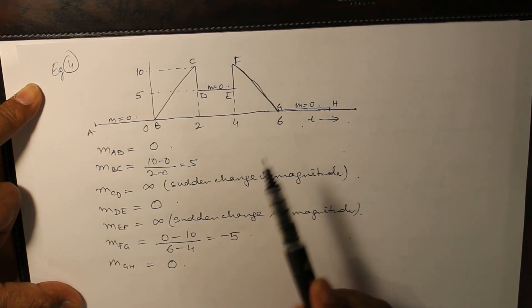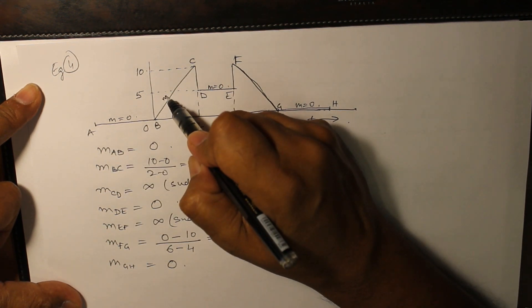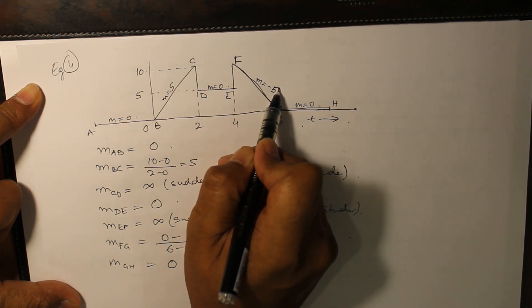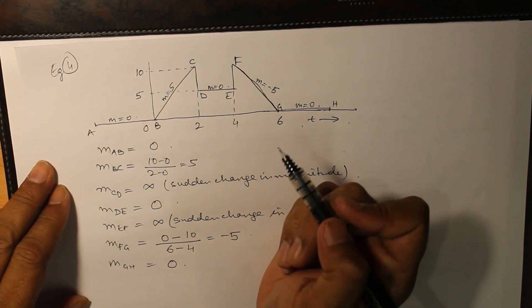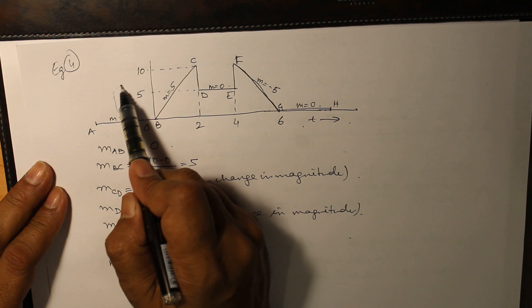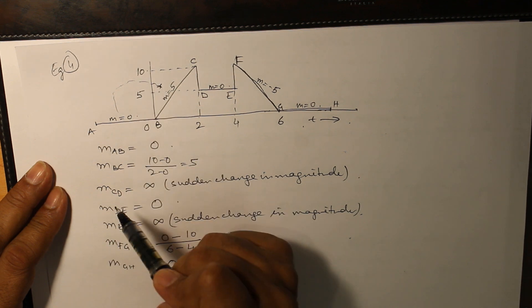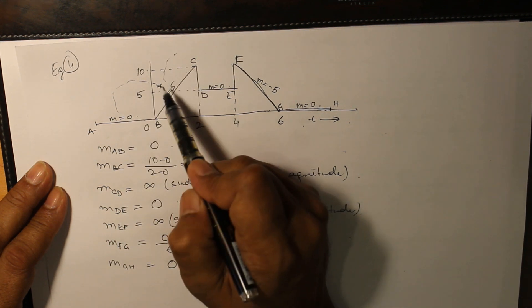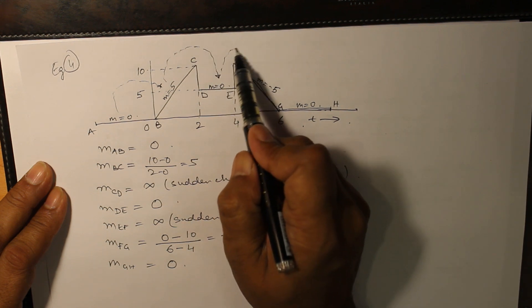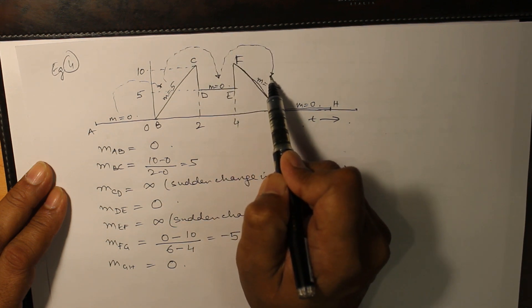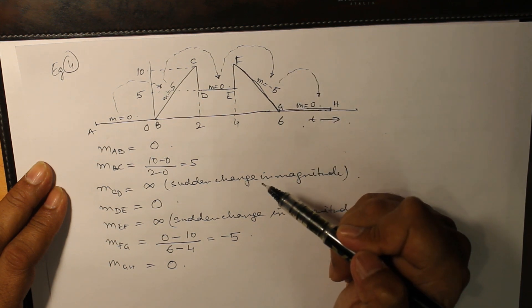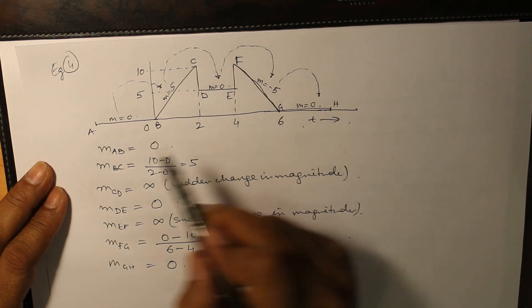So we have m equal to 0 at three places, m equal to 5 at one place, and m equal to minus 5 at one place. How many slope changes are there? First, from 0 to 5; second, from 5 to 0; third, from 0 to minus 5; and fourth, from minus 5 to 0. Let us write down what the changes are.